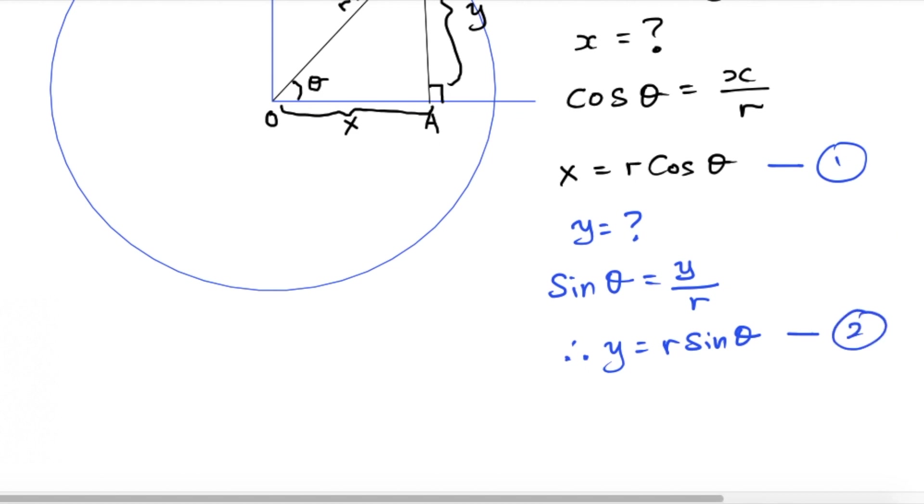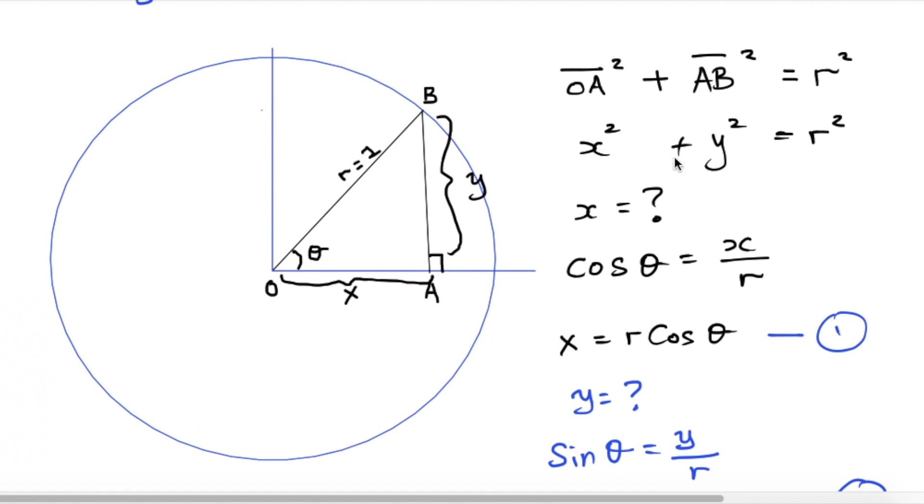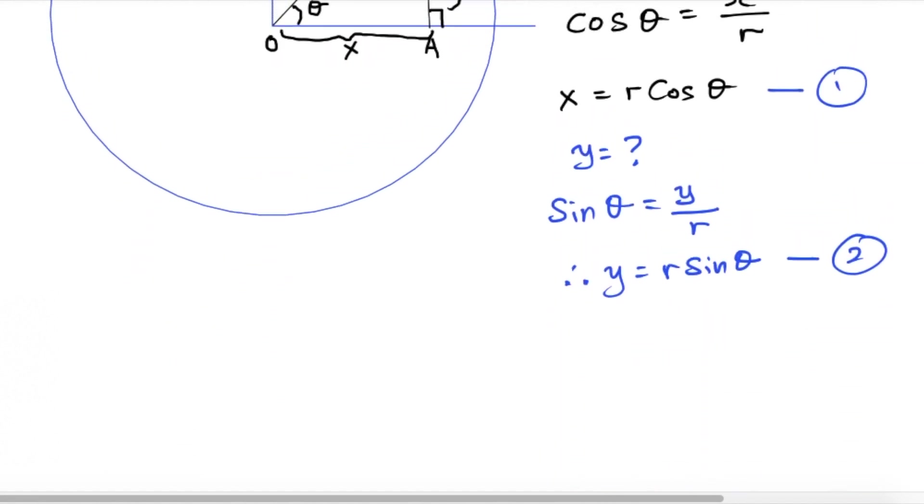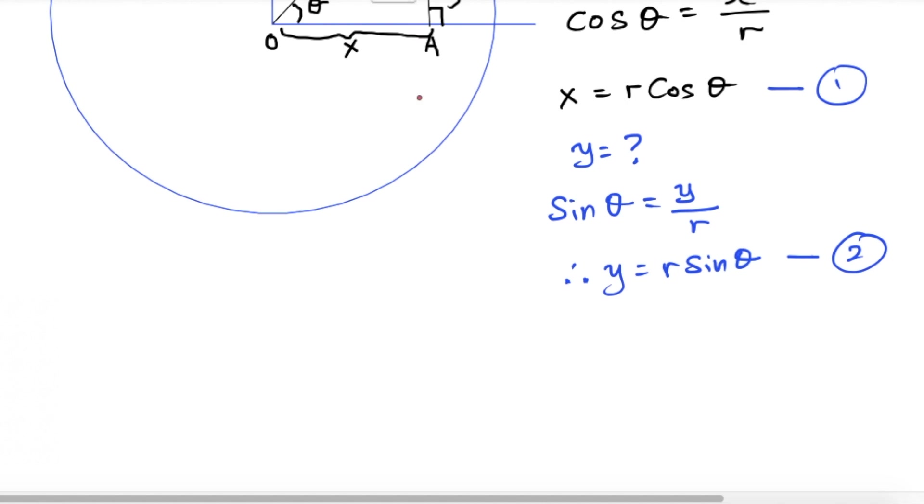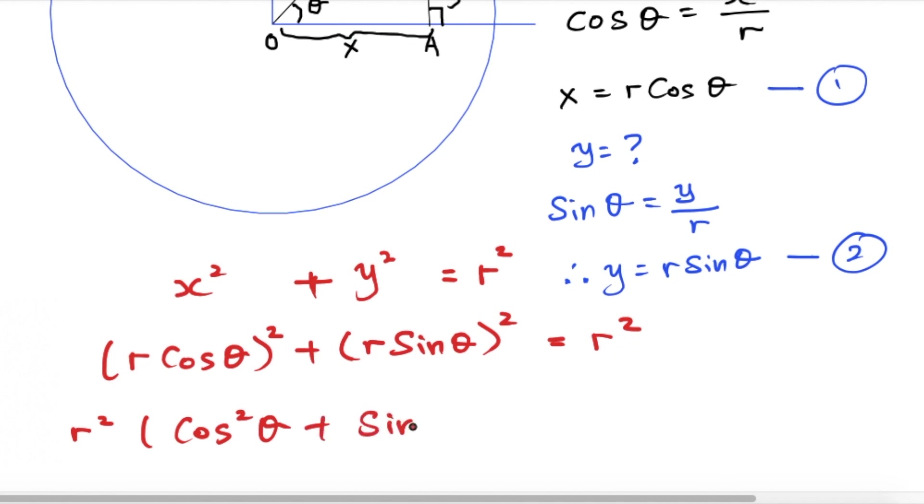If I substitute into the Pythagorean theorem earlier here, my equation turns out to be the following. So X squared, so therefore there will be R cos theta, this is X squared, plus Y squared, R sine theta, this is actually Y squared, supposed to be equal to R squared. So I would expand this, multiply, I mean square them both and then round off the R and R, or you factorize R. So R squared cos squared theta plus sine squared theta is actually equals to R squared.